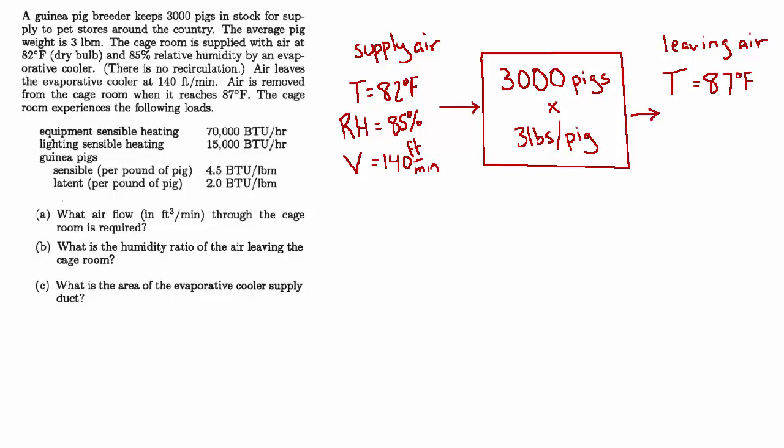A, what air flow through the cage room is required? B, what is the humidity ratio of the air leaving the cage room? And C, what is the area of the evaporative cooler supply duct?